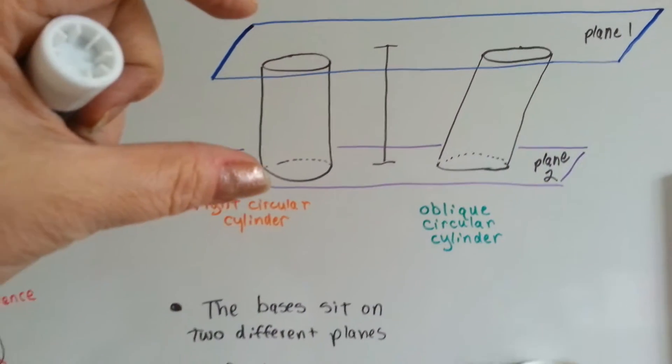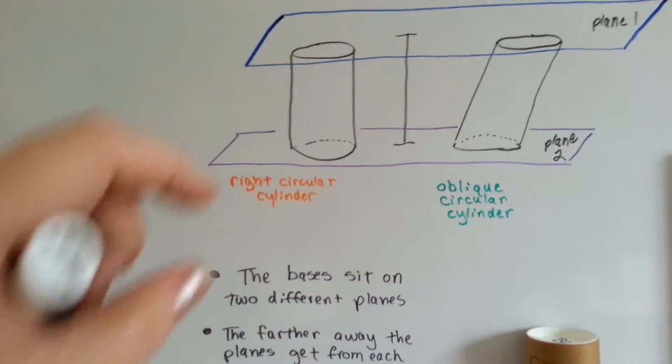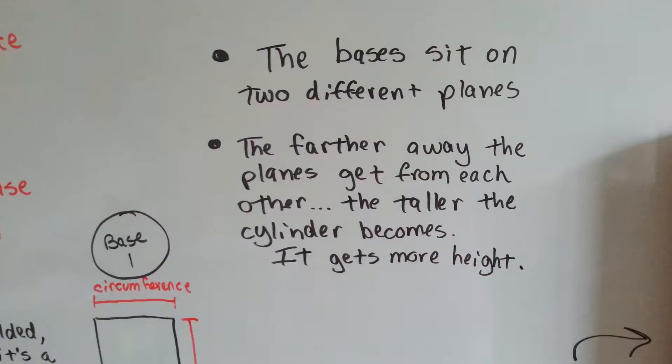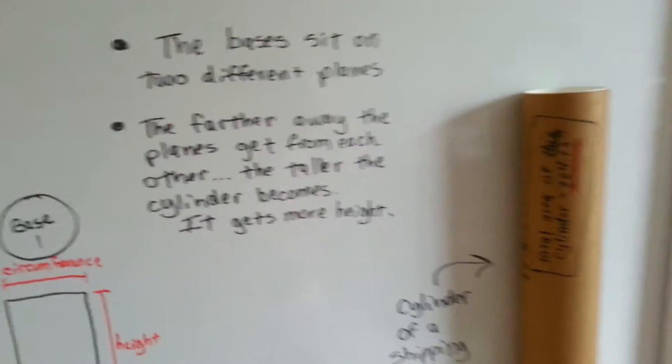Each base is on a different plane. See that? They sit on two different planes. The farther away the planes get from each other, the taller the cylinder becomes. It gets more height.